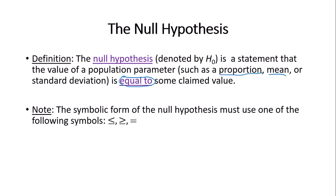The symbolic form of the null hypothesis must use one of the following symbols: less than or equal to, greater than or equal to, or just equal to. These are the only three symbols possible when writing out the null hypothesis.